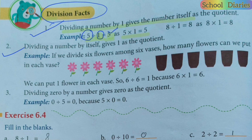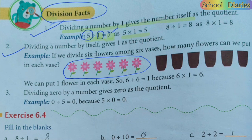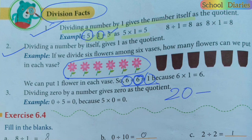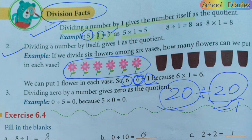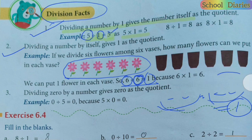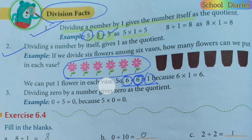Now Fact Number Two: if you divide a number by that same number itself — for example, if you have six chocolates and you have to distribute them among six children — then the answer will be one. Each child will get one. This is Fact Number Two.